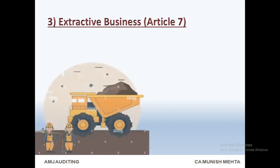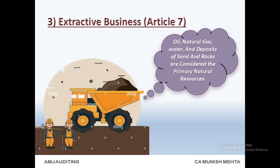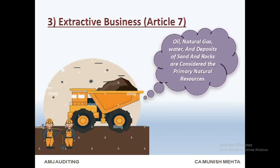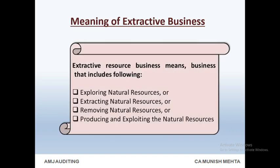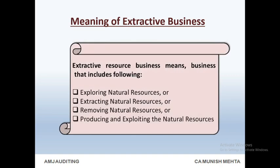Extractive Business — Article 7. Oil, natural gas, water, and deposits of sand and rocks are considered the primary natural resources. Extractive Resource Business means a business that includes: exploring natural resources, or extracting natural resources, or removing natural resources, or producing and exploiting natural resources.